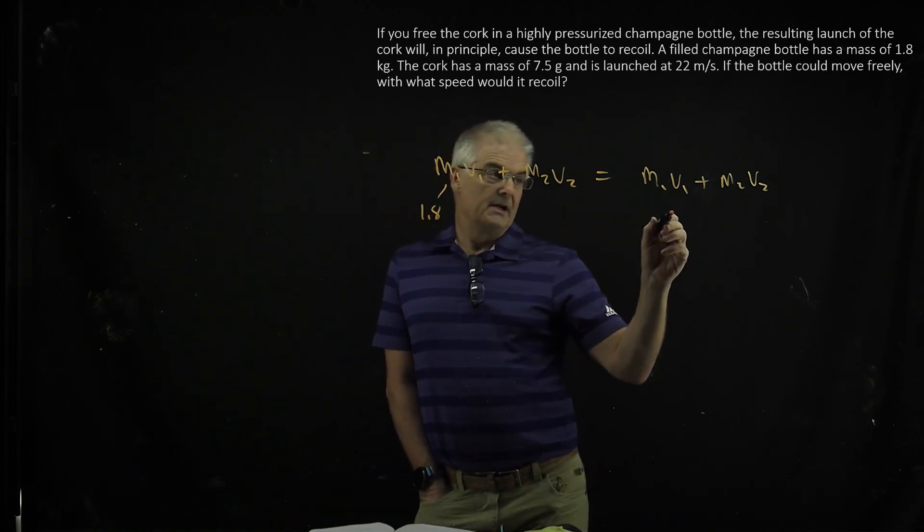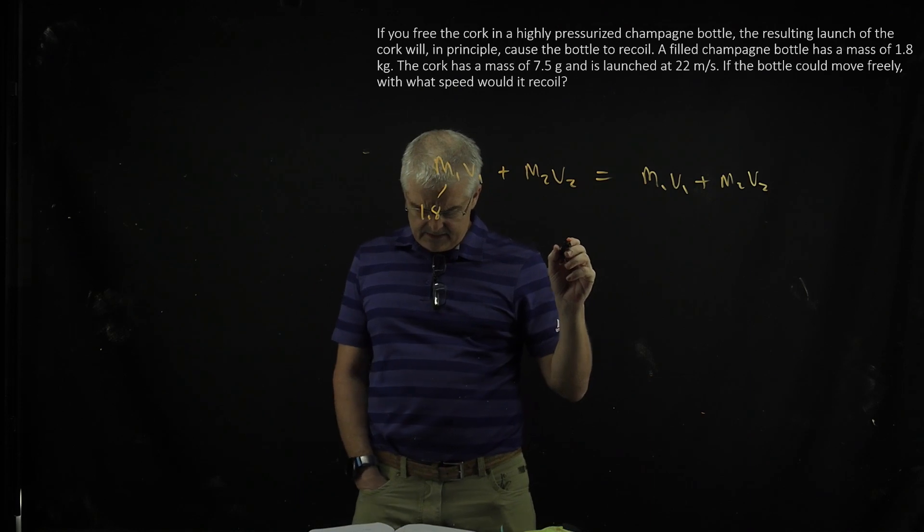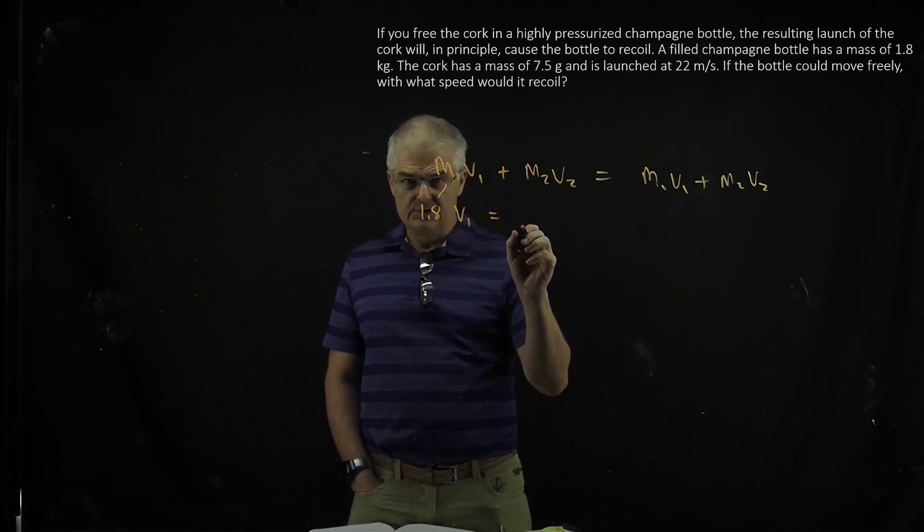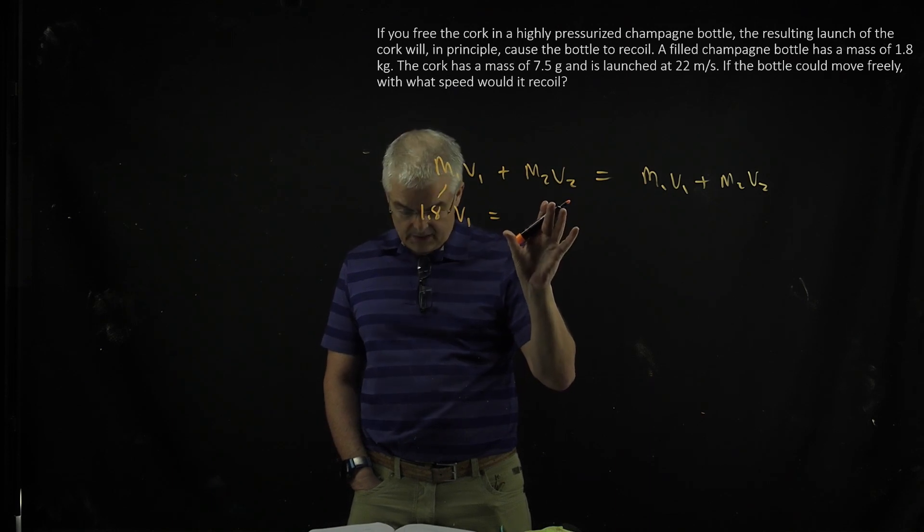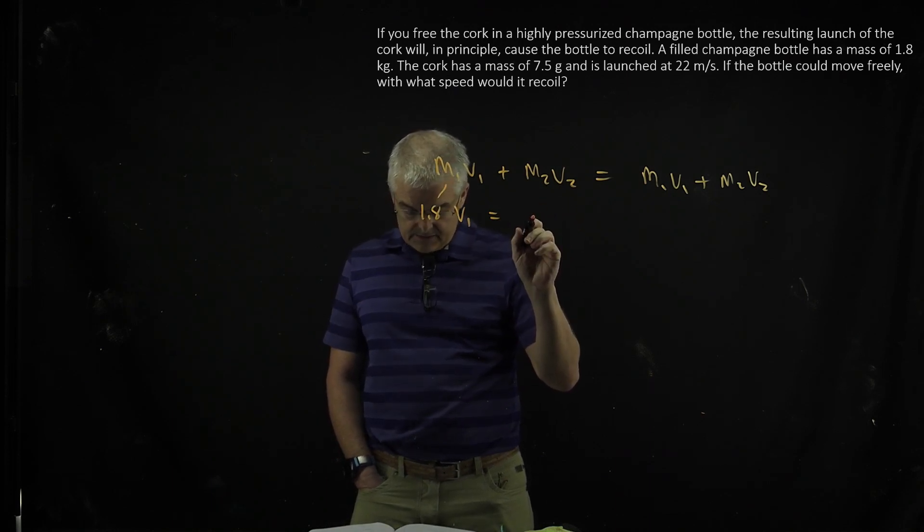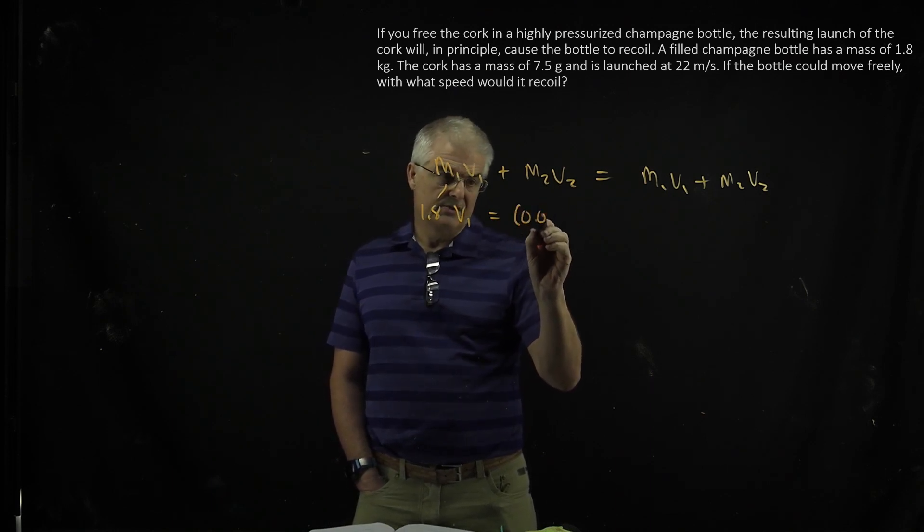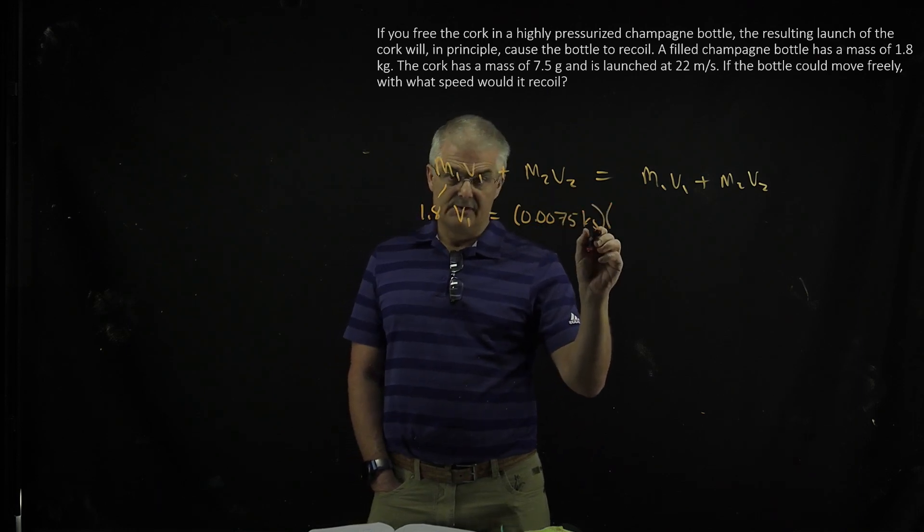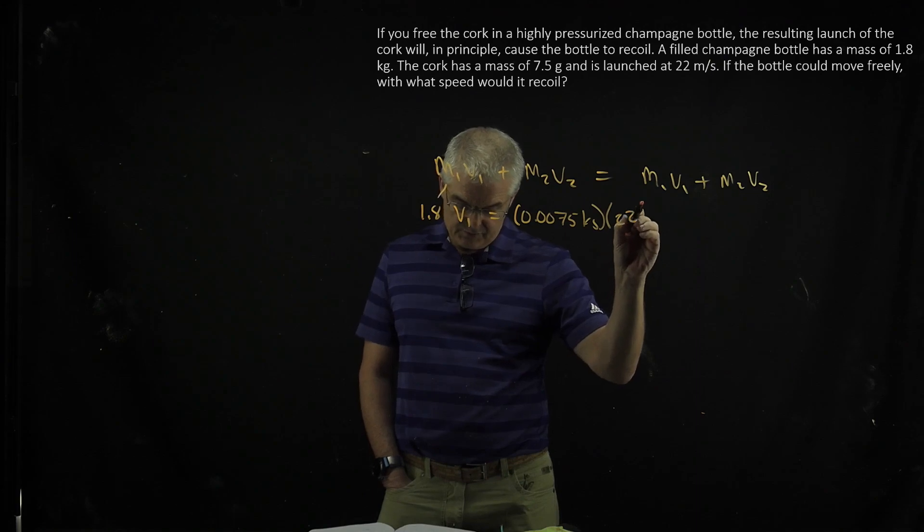So on this side, 1.8 times V1, we don't know V1, would have to equal the mass of the cork. The cork is 0.0075 kilograms times the speed of 22 meters per second.